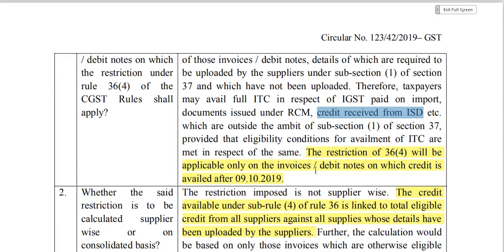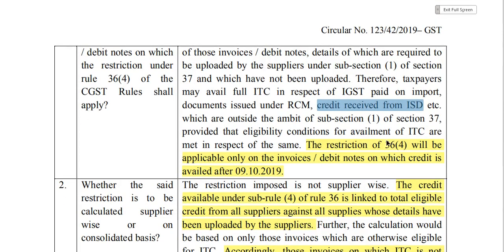An important clarification: the restriction of Rule 36 Sub-Rule 4 is applicable only on invoices and debit notes on which credit is availed after 9th October 2019, the date this provision came into effect. For invoices where credit was already availed before 9th October 2019, you can get 100% credit.